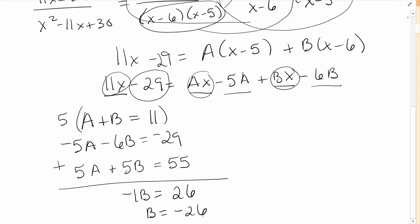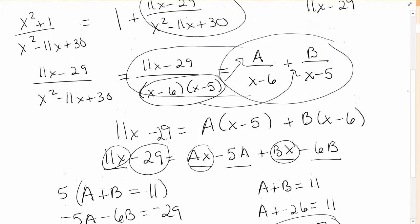So if b is equal to negative 26, you can plug that into either of your first two equations. But remember we have a plus b equals 11. So we can say a plus negative 26 is equal to 11. And then we get a is equal to 37. Okay, so now we know what a is and we know what b is and we can plug those in to our original problem.